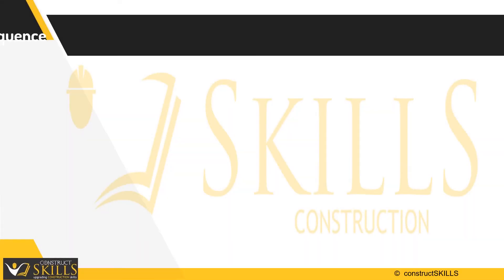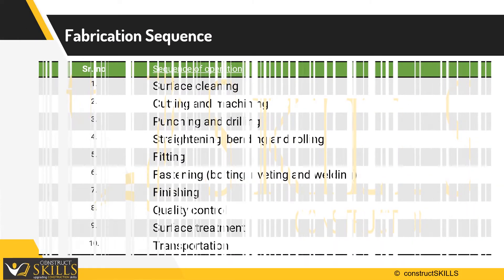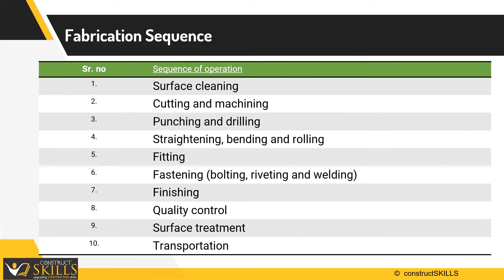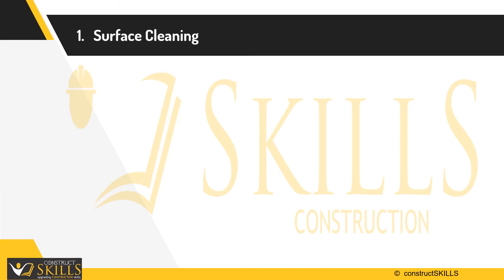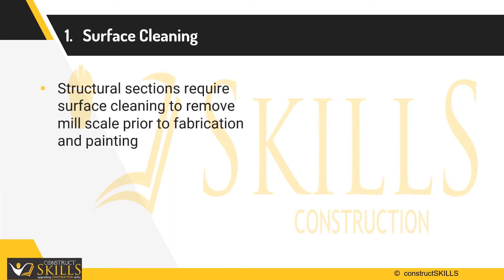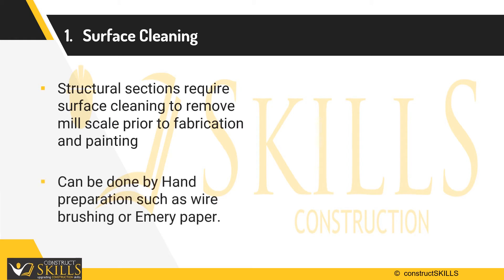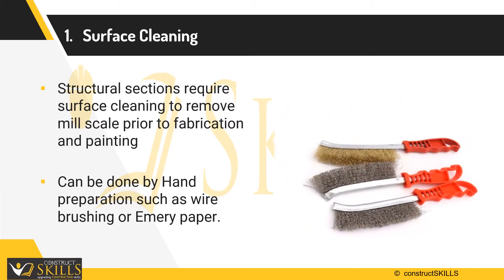There are 10 basic steps involved in a typical fabrication operation. Starting with step one: surface cleaning. It is important to remove the mill scale prior to the fabrication process. It can be done by various methods like hand preparation by wire brushing or rubbing emery paper. All the rust should be removed and the surface be roughened.